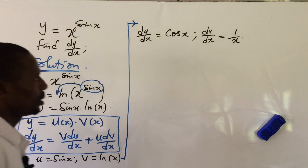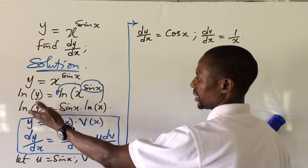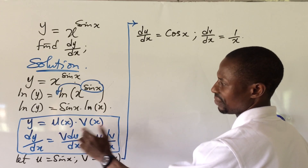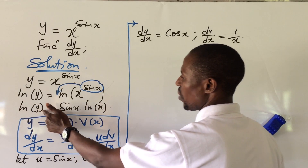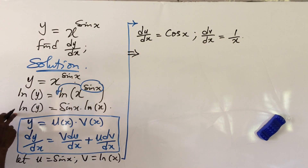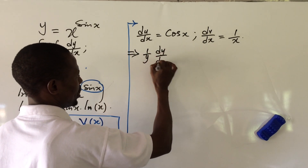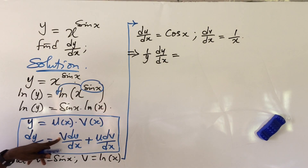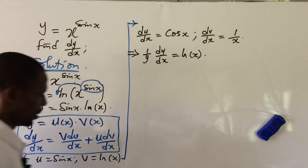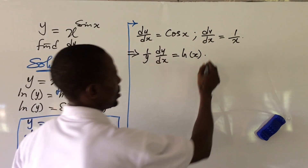Now let's go back to our main function and differentiate ln(y). Differentiating the left-hand side, the differential of ln(y) gives us 1 over y times dy/dx. On the right-hand side, applying the product rule: v times du/dx gives us ln(x) times cos(x).